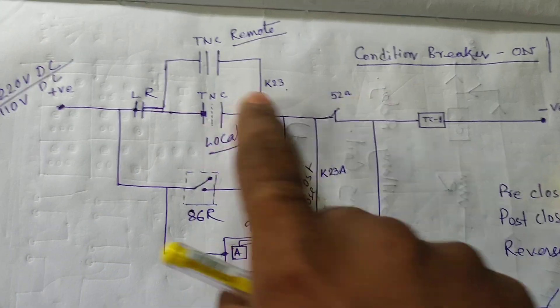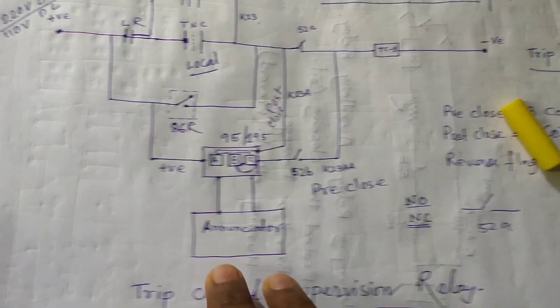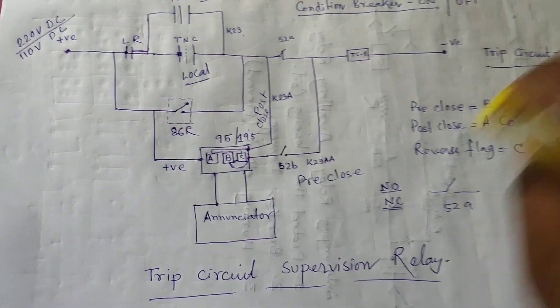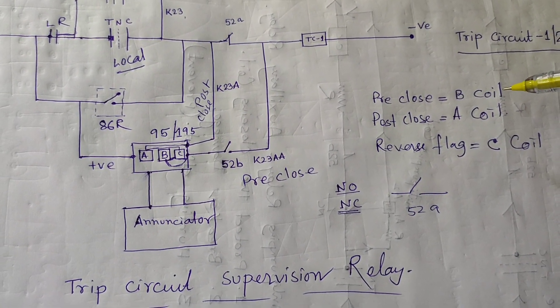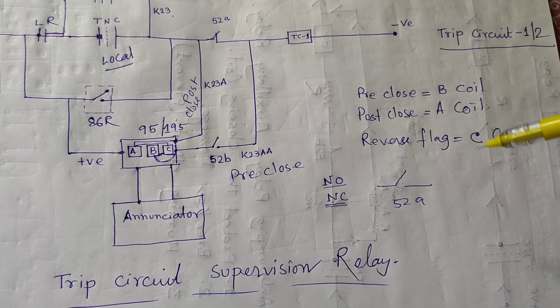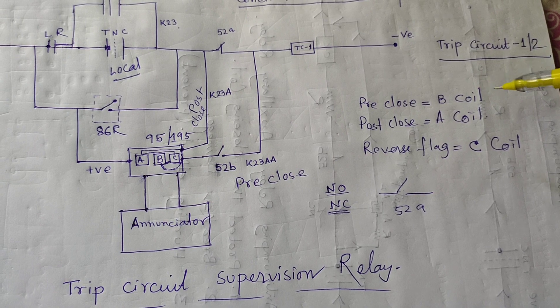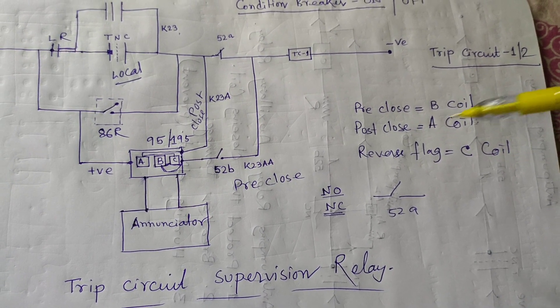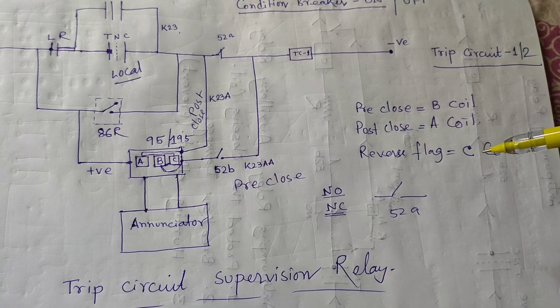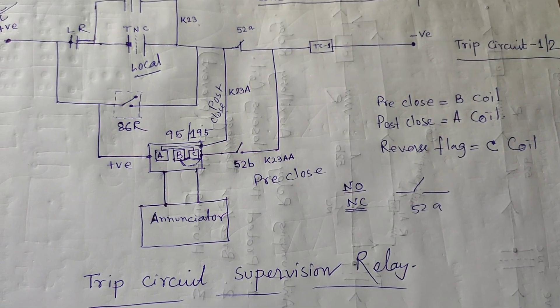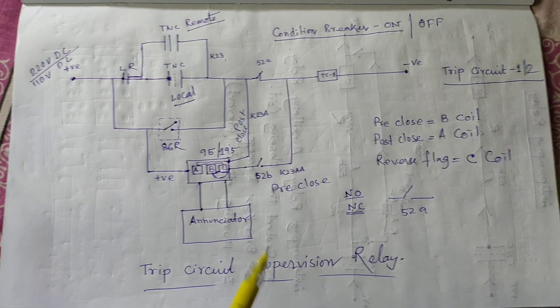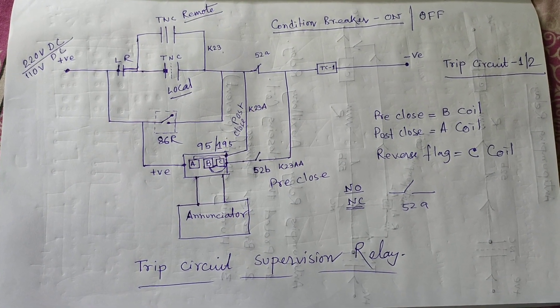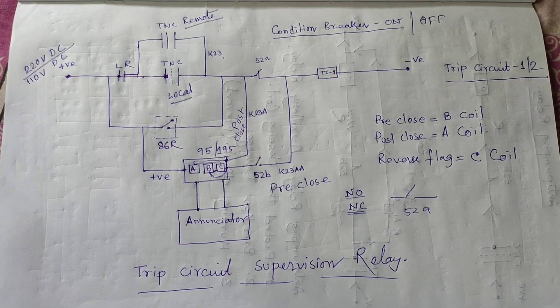We should remember that for pre-close, the B coil is used; for post-close, the A coil is used; and the C coil is the summation — B coil provides power to C coil for energization, and A coil also provides power to C coil for energization. If you are interested in my technical videos, please subscribe to my channel and share with your friends and colleagues. Thank you very much for watching my video.